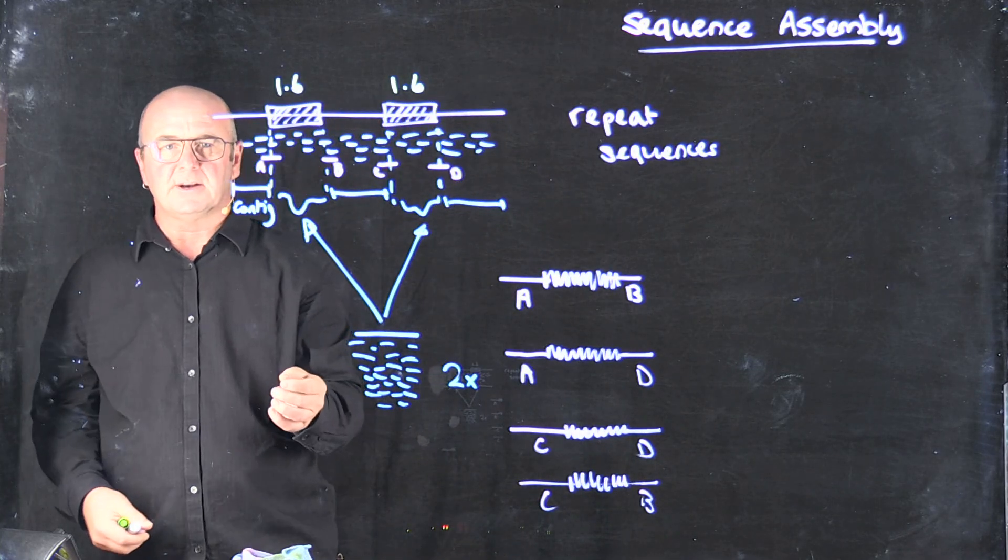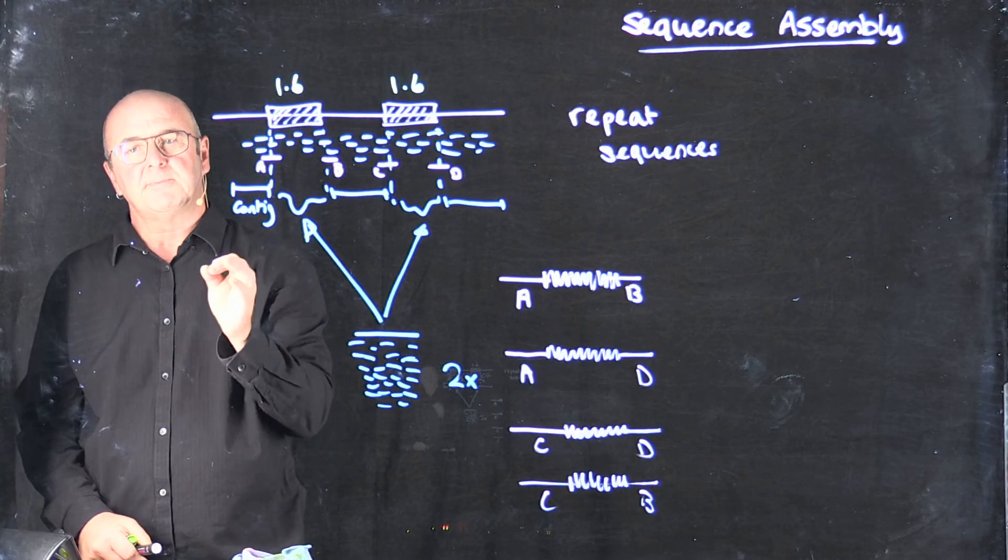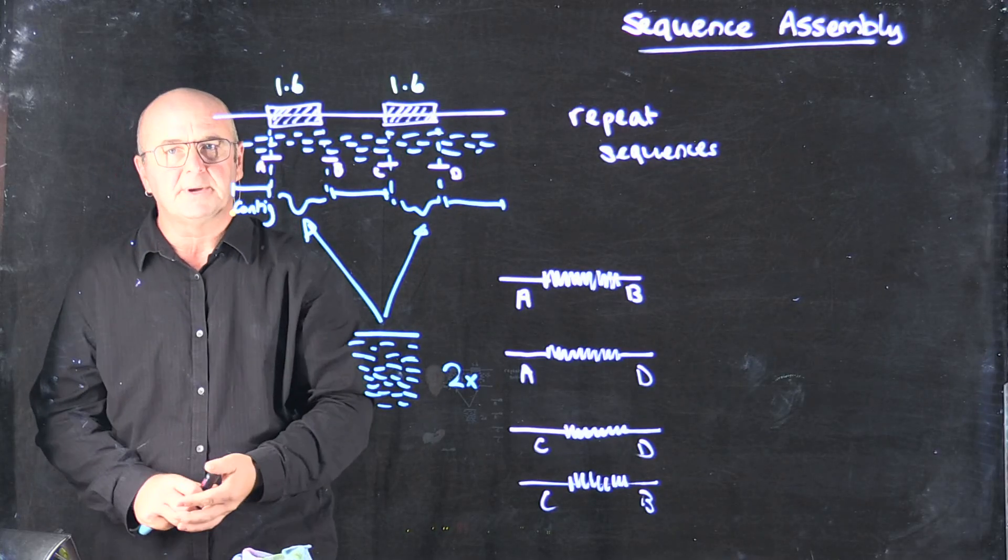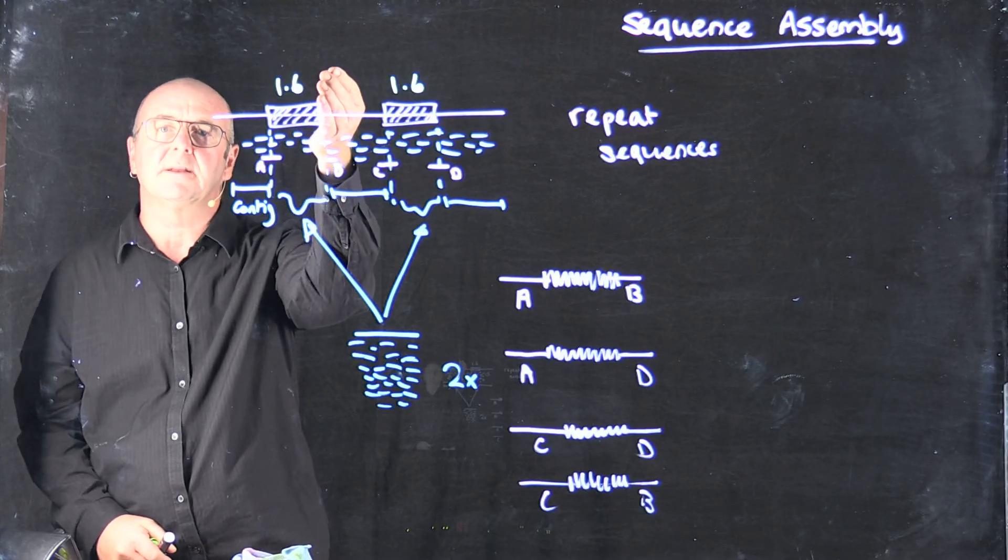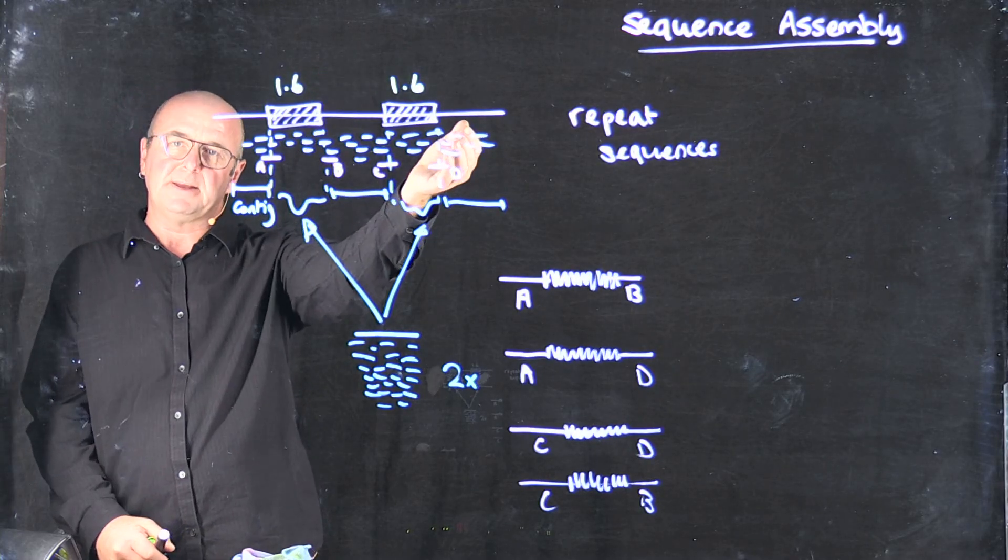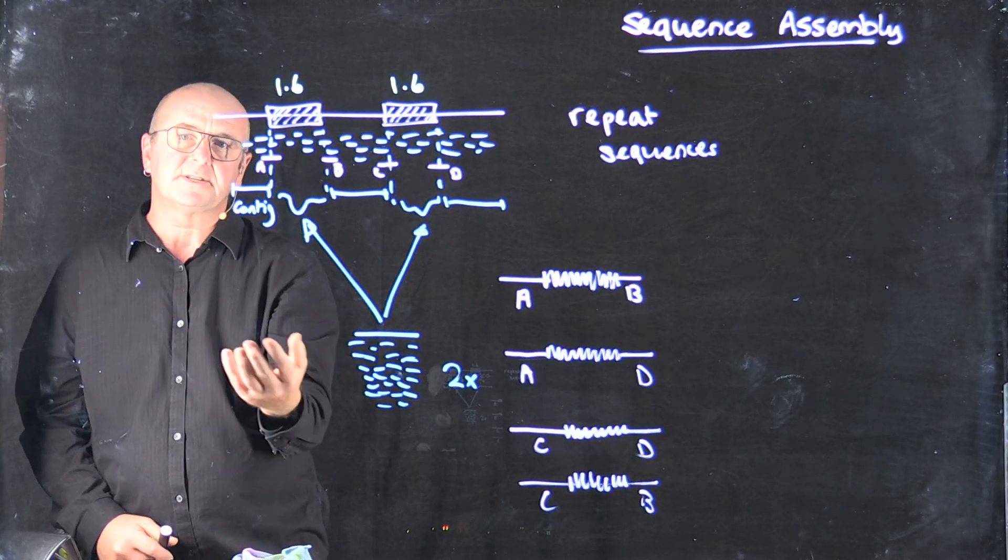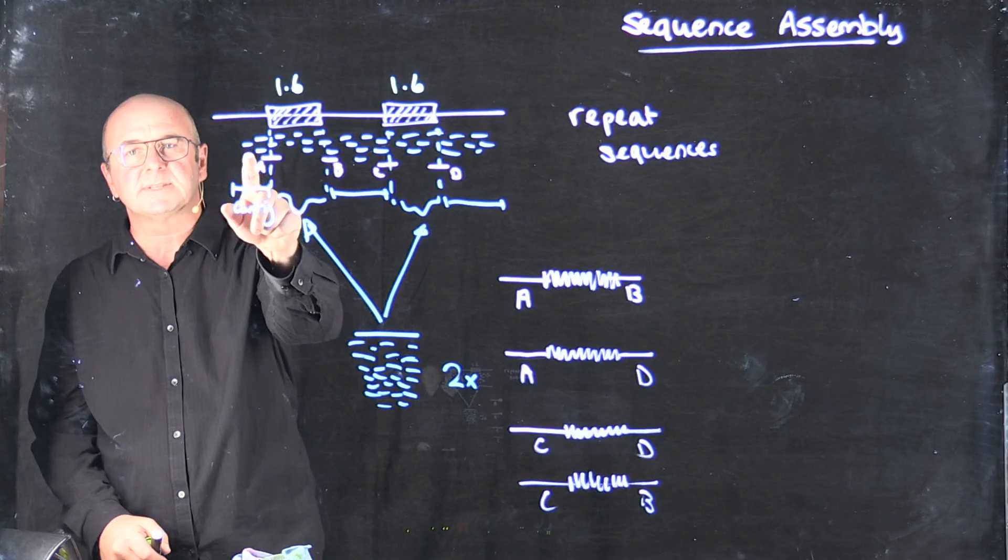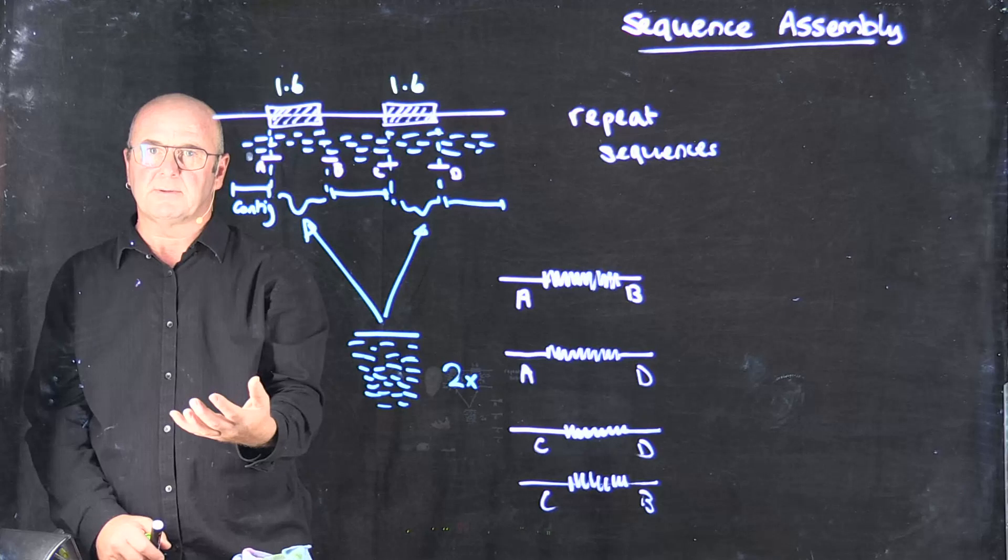So with short read technology, these repeats cause huge kinds of problems. Now depending on exactly the genome, you're going to have more or less of the repeats. Depending on the genome, some of the repeats are going to be longer, they're going to be 1.6 kilobases, maybe longer. But even if those repeats are just a couple of hundred bases, if the repeats are longer than or about the same size as our individual reads, we're still not going to be able to solve the assembly problem easily.